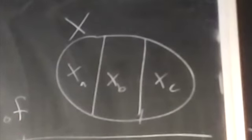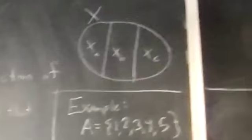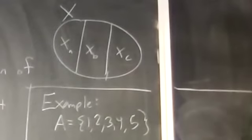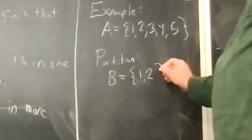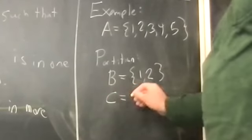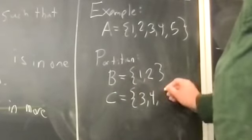As an example, let's look at a, 1, 2, 3, 4, and 5. Can you give me a partition of a into two subsets? B, which consists of 1 and 2, and C, which consists of 3 and 4.